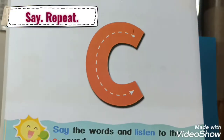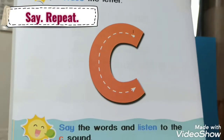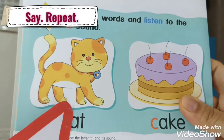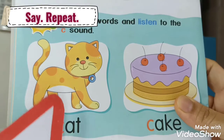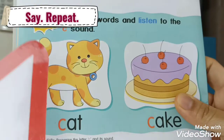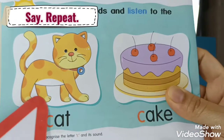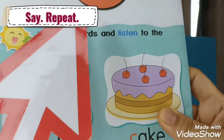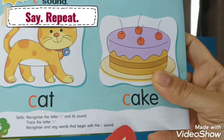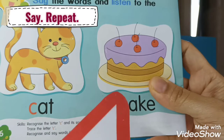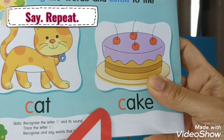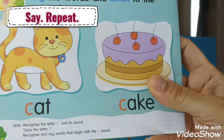C — K, K, K, K — Cat. K, K — Cat. K, K — Cake. K, K — Cake.